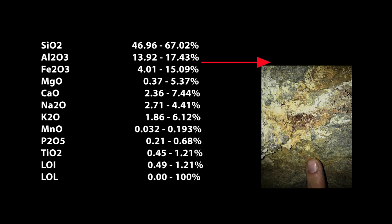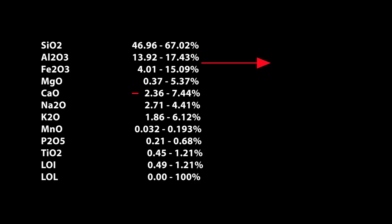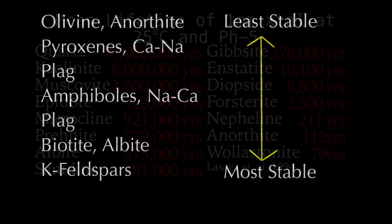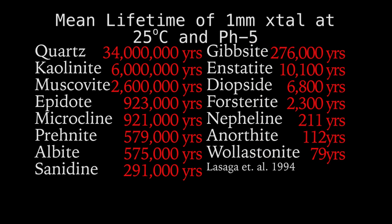The biggest changes happen in the most mobile elements like calcium, sodium, or magnesium. Lastly, we can look at how much various minerals at the surface of parent rocks have weathered, and knowing average mineral weathering rates, determine how long this rock has been chemically weathered to a soil overburden.